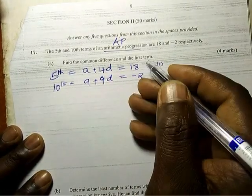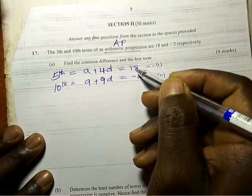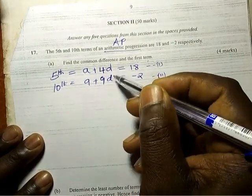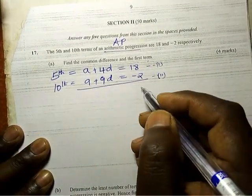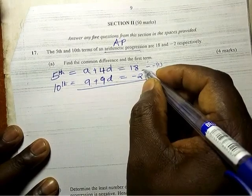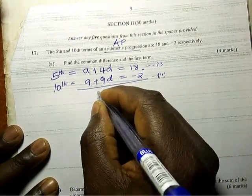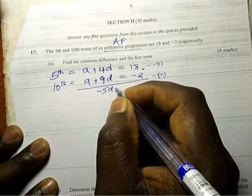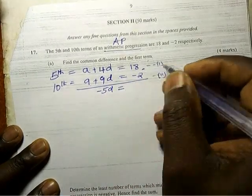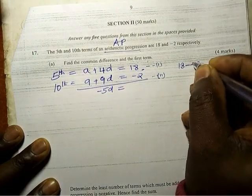So we are going to solve this using simultaneous equations. We can solve them using elimination, substitution, whichever you want. So let us just use elimination. A minus a is zero, 4d minus 9d, that is minus 5d. We are going to have negative 5d. 18 minus minus 2, the answer is 20.